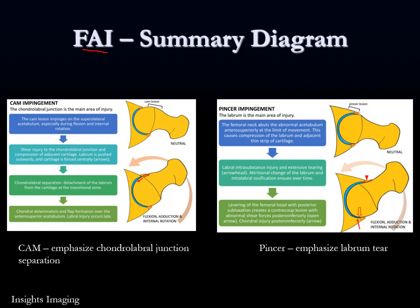There are two main types of femoral acetabular impingement: cam impingement and pincer impingement. Cam involves an anterior osseous protuberance at the femoral head-neck junction, while pincer involves anterior acetabular over-coverage. The chondrolabral junction is the main area of injury in cam-type FAI, and the labrum itself is typically injured in pincer-type. The hip flexes, adducts, and internally rotates to cause stress on those structures.